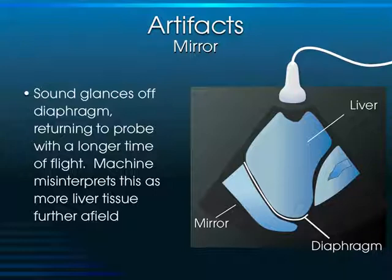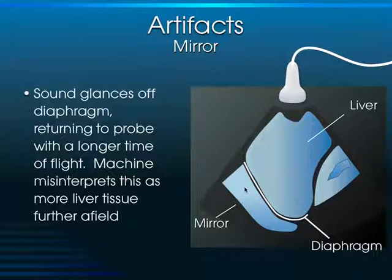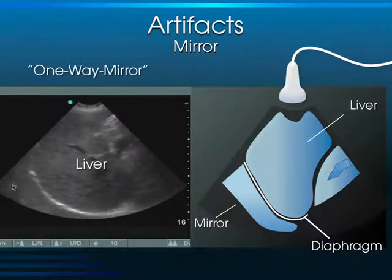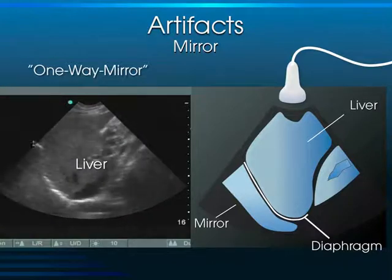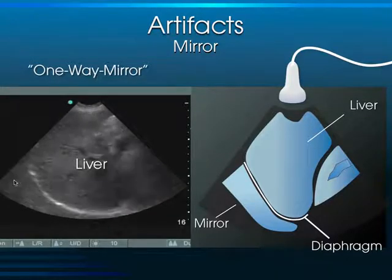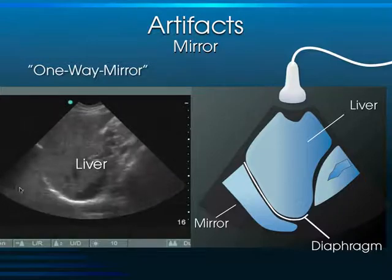The mirror image artifact occurs as sound travels through the liver and encounters the diaphragm. It comes back to the transducer and the machine mistakenly places a mirror image of the liver above the diaphragm in the chest. Normally, this tells us there's no blood or fluid in the chest. When you lose the mirror image artifact, that's when the patient has fluid or blood in the chest — sound can cross the diaphragm and everything above appears black.